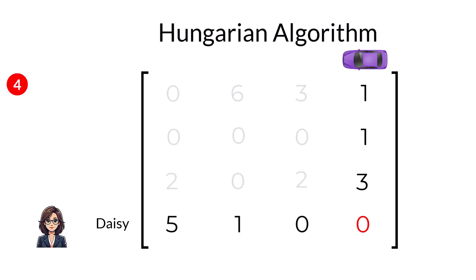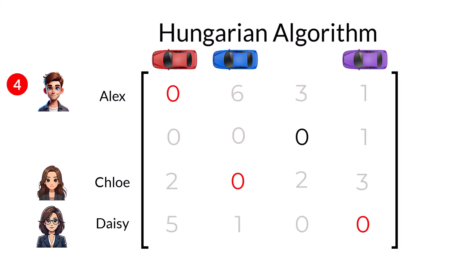We move on to the next allocation looking at the rows and columns. Row one has only one zero. So, the red car is allocated to Alex. And, row three has one zero. So, the blue car is allocated to Chloe. That leaves the green car allocated to Ben.